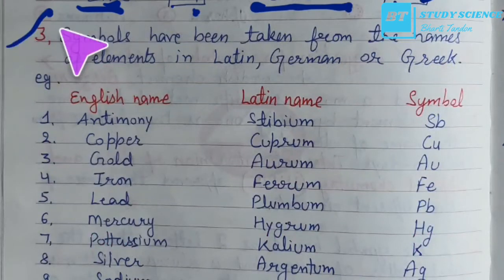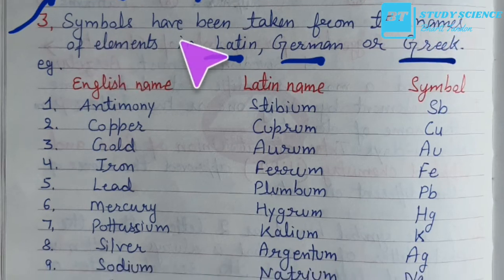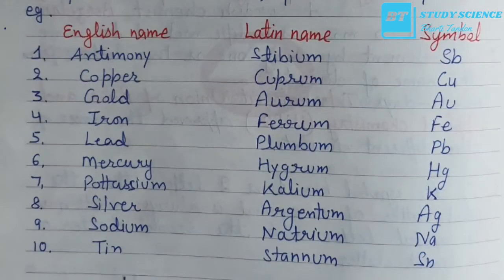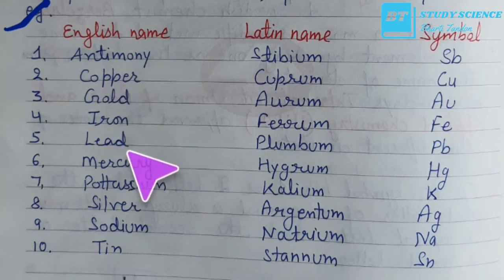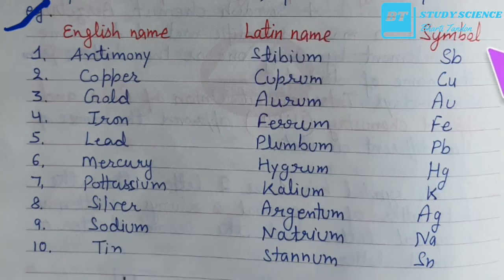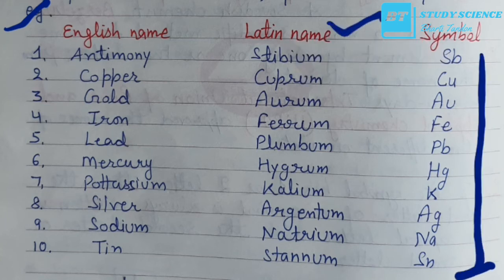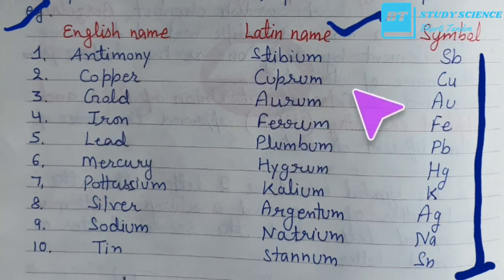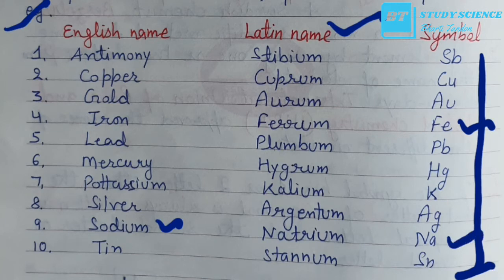Third rule: some symbols have been taken from the names of elements in Latin, German, or Greek. Examples include antimony, copper, gold, iron, lead, mercury, potassium, silver, sodium, and tin — their symbols come from their Latin names. For instance, iron is written as IRON but its Latin name is ferrum, so its symbol is Fe. Sodium's Latin name is natrium, so its symbol is Na.